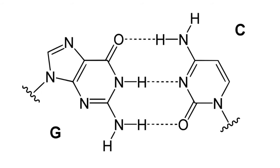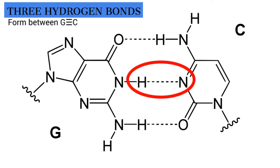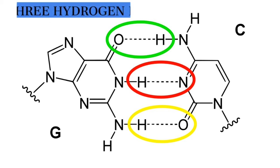When a guanine lines up across from a cytosine, there are three hydrogen bonds that form. The first H bond forms between a hydrogen of the guanine and a nitrogen of the cytosine. A second hydrogen bond forms between the other guanine hydrogen and the cytosine's oxygen. And a third H bond forms between the cytosine's hydrogen and the oxygen of the guanine.